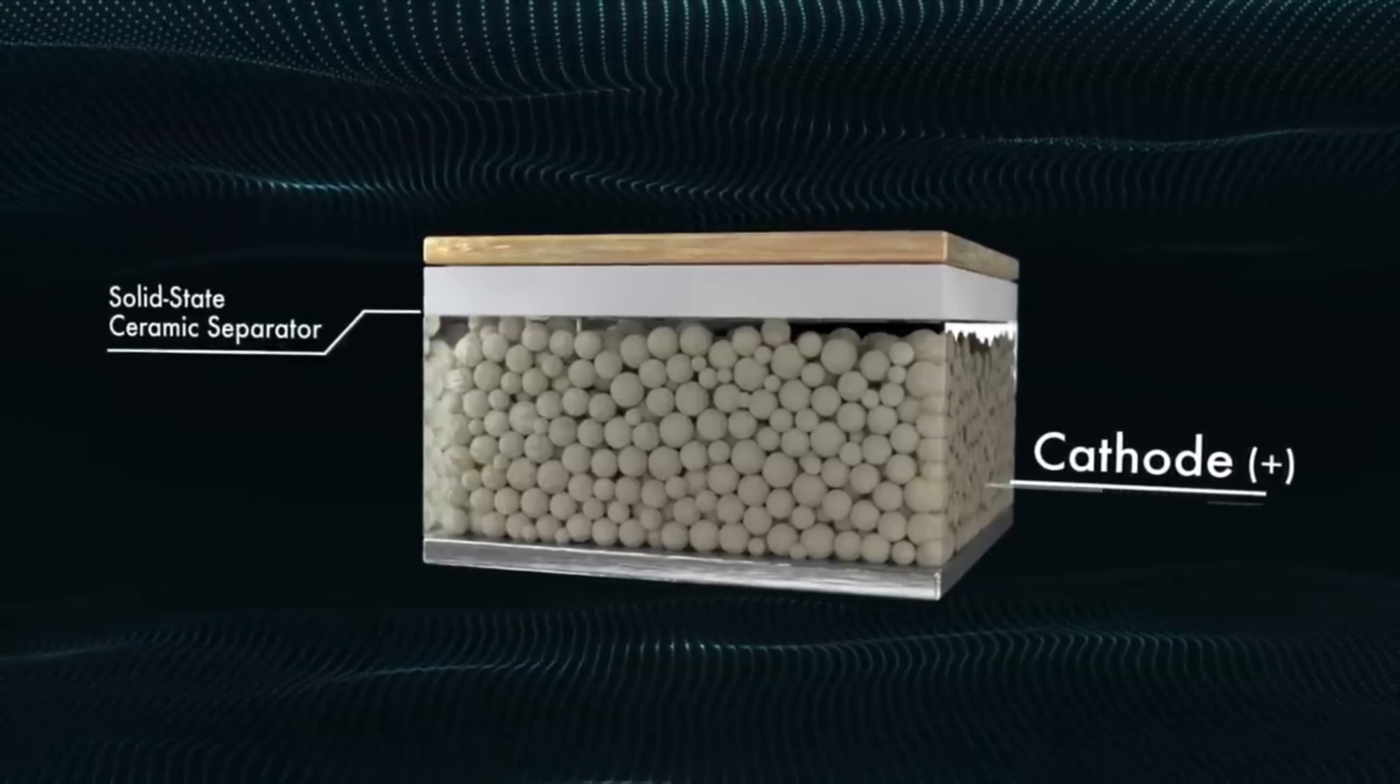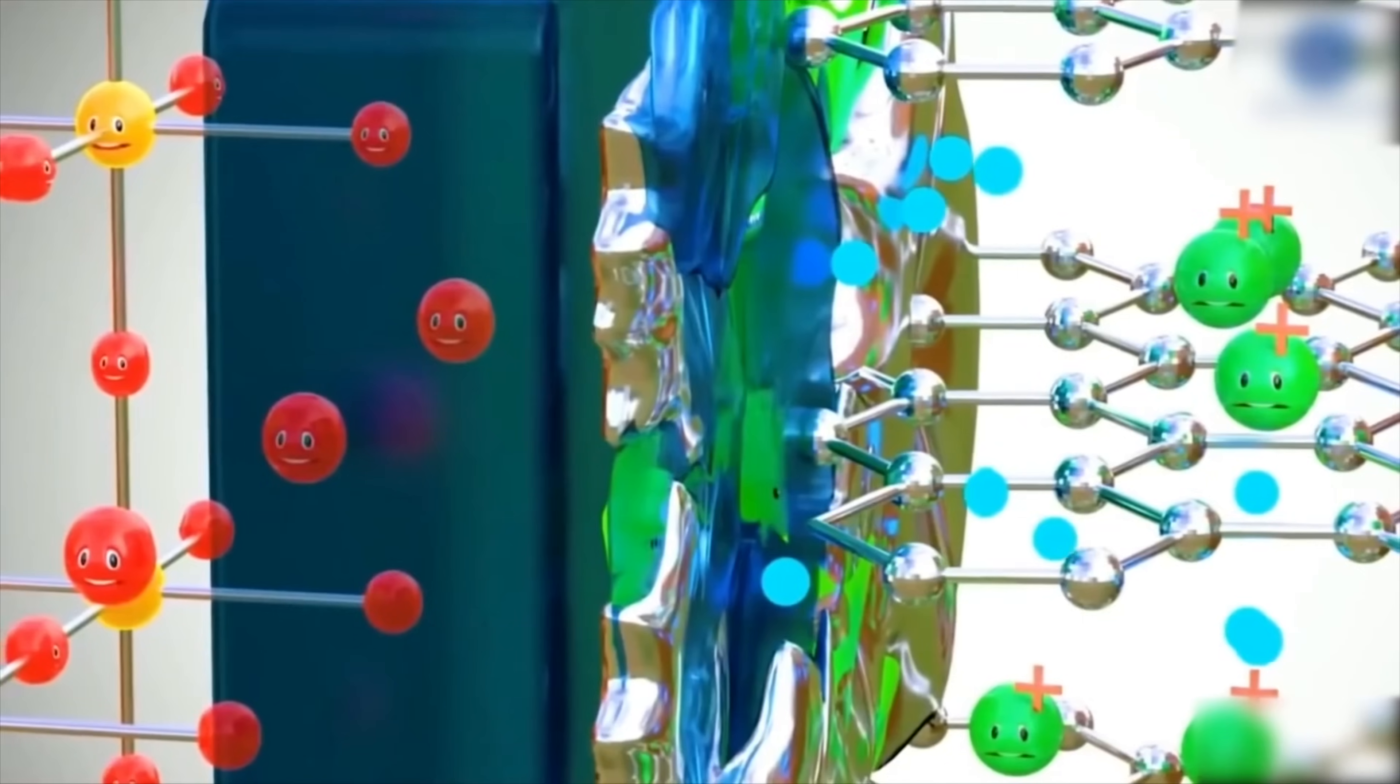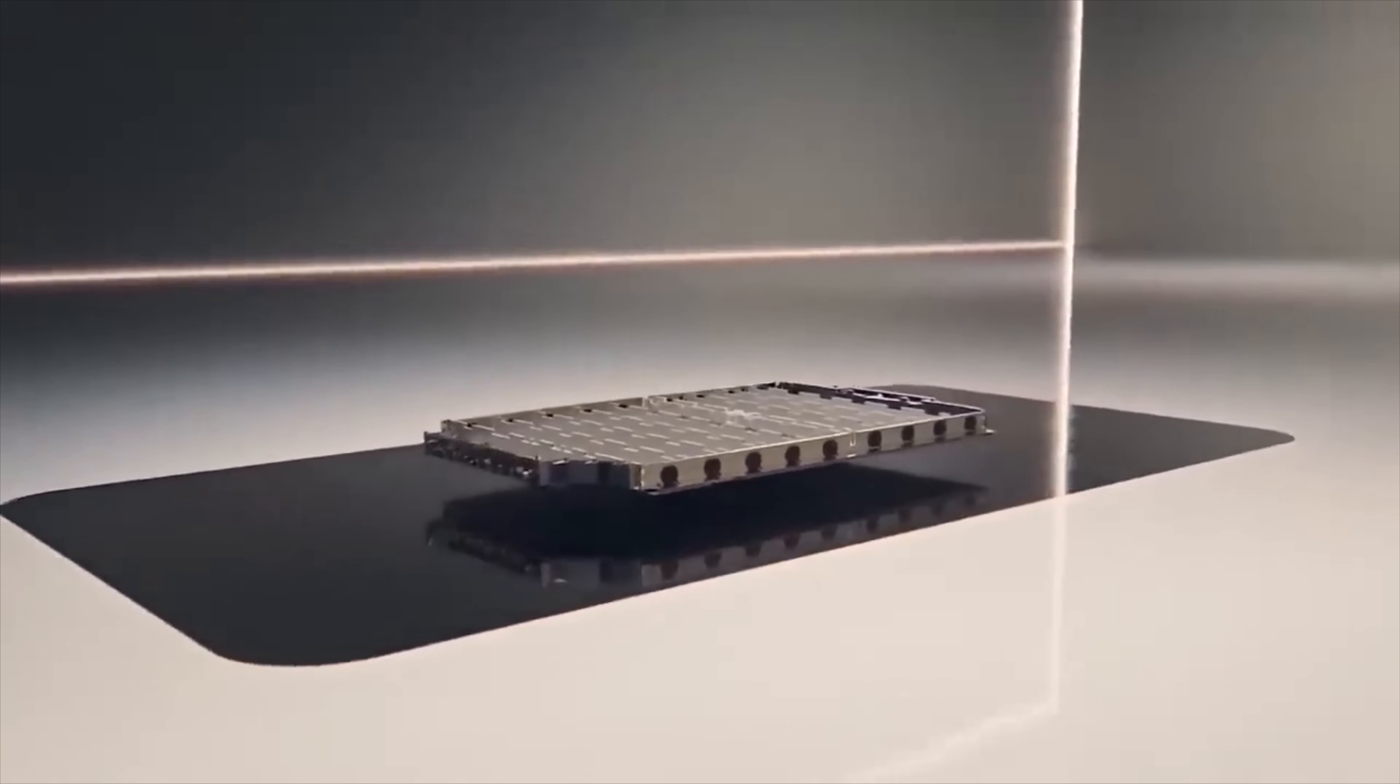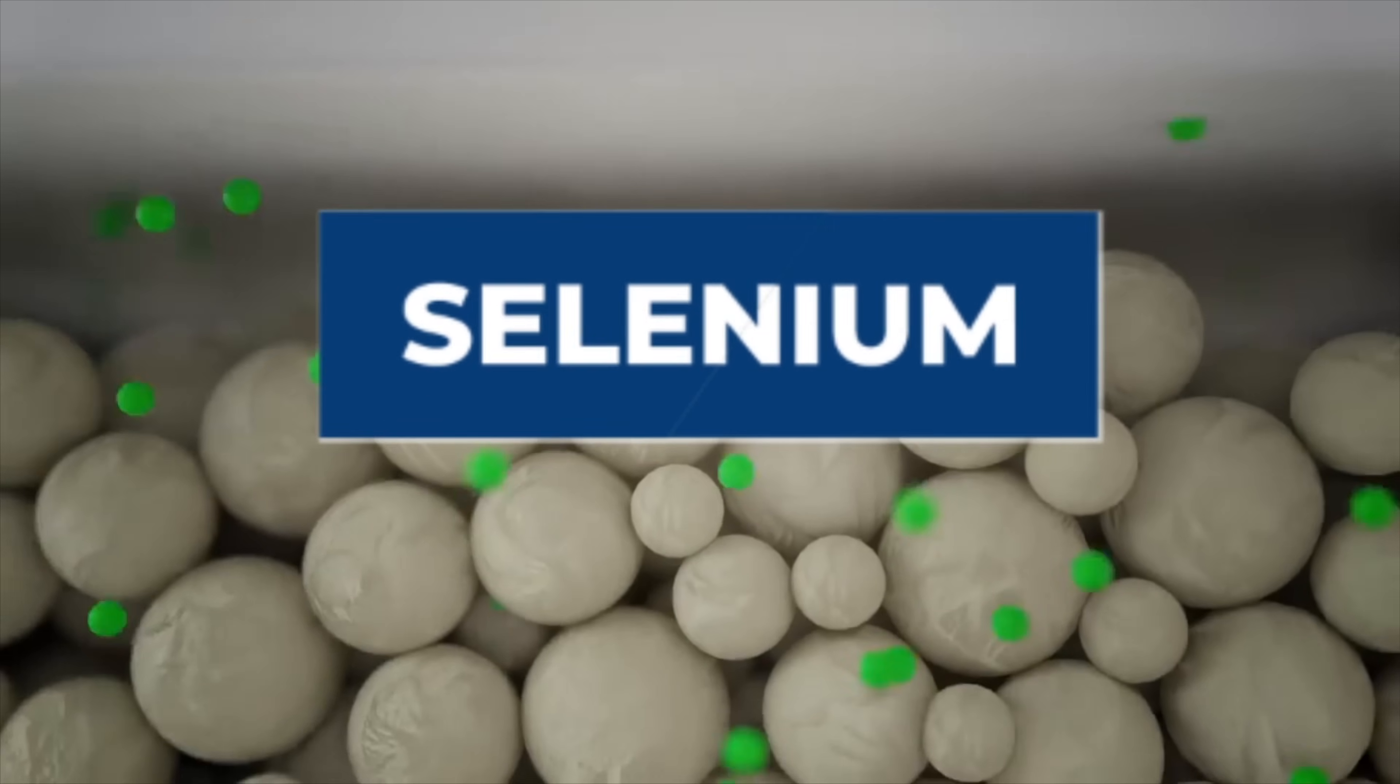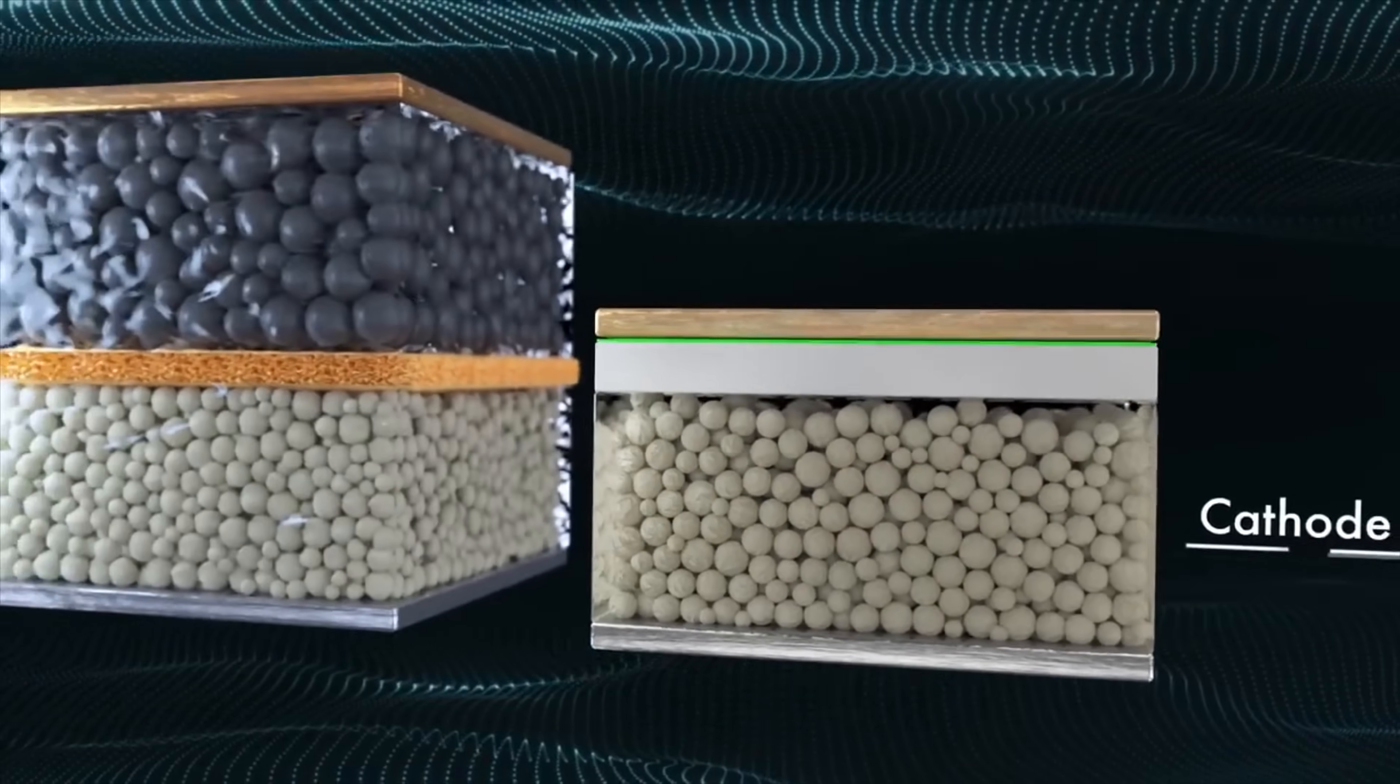The main advantage of using sulfur and selenium in the cathode is that they have very high theoretical capacities, which means they can store a lot of energy per unit mass. Sulfur has a capacity of 1,670 mAh per gram, while selenium has a capacity of 675 mAh per gram.